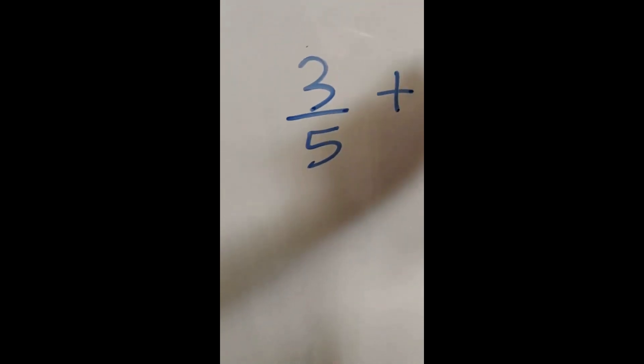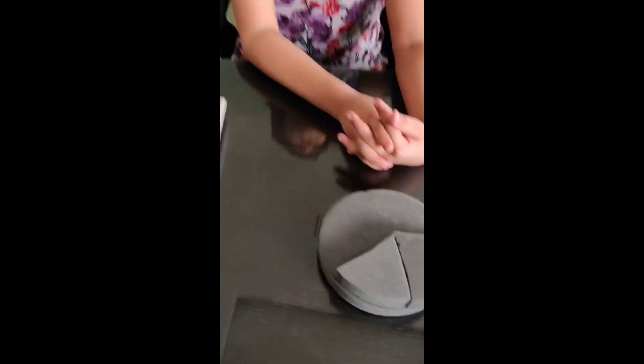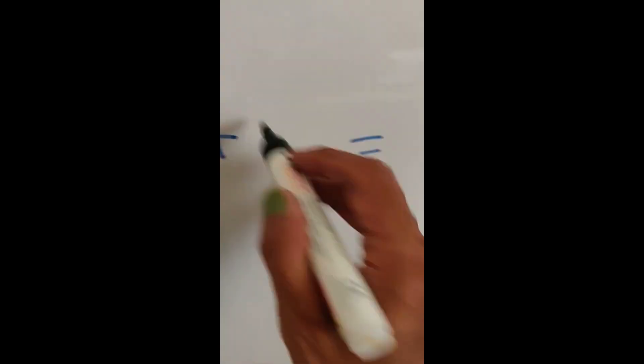3 fifth plus kya will make whole pizza? Think and tell me. 3 fifth of the pizza plus kya? Plus 2 fifth of the pizza. Brilliant! So to make anything whole, what we have to do? Whatever is the balance, we have to add to it.